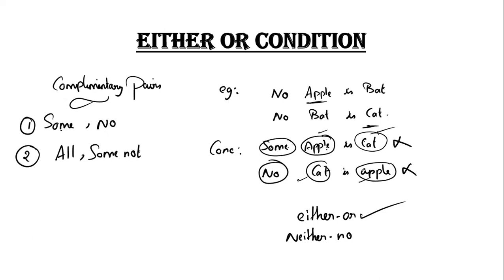Here is apple-cat, here is cat and apple-cat. Some-no is also a rule apply. We have a statement, we have a conclusion, we have a rule apply. Rule apply is random — the chance we get either-or and neither-nor. If you check the statement, the variable is same: apple-cat and apple-cat. Some-no is the same, and some-no is reversible.